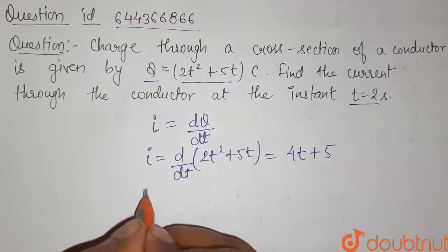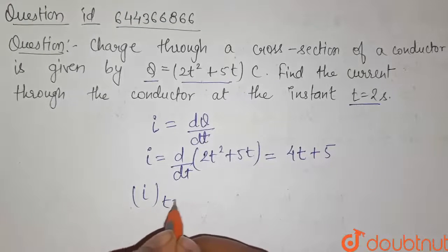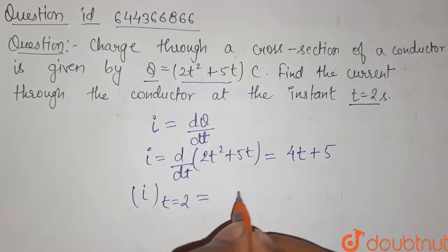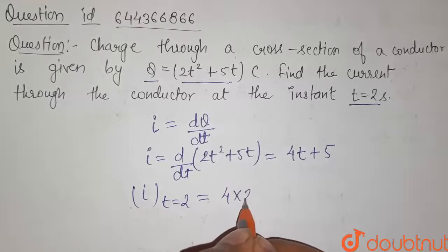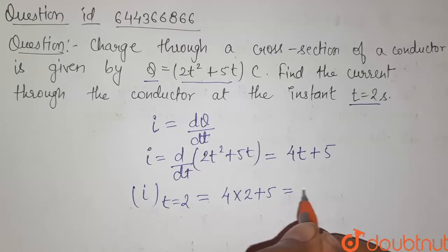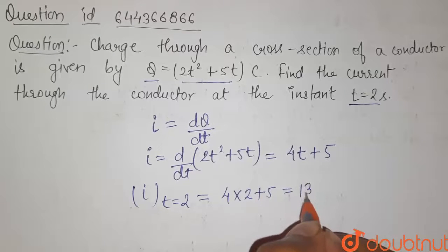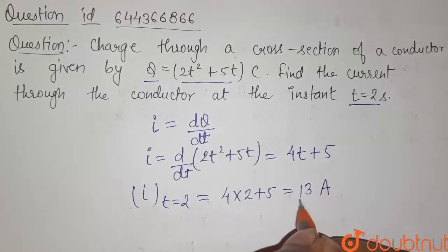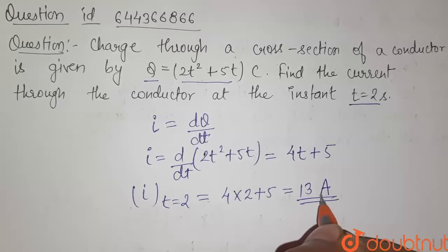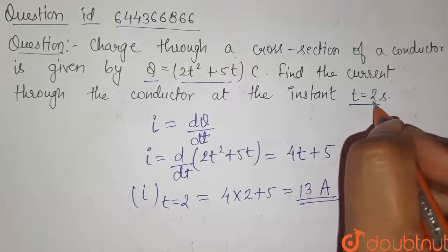Now we have to find the value of current at t equals to 2. So here it will be 4 into 2 plus 5. That is 8 plus 5 equals to 13. So 13 ampere will be the value of current at t equals to 2 second.